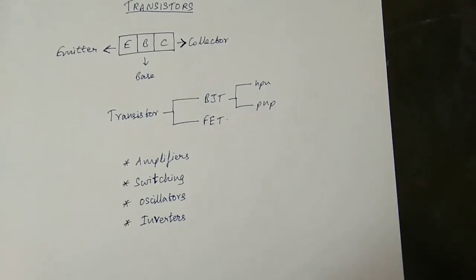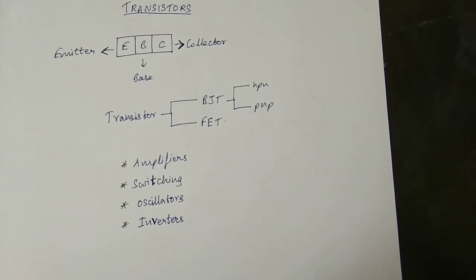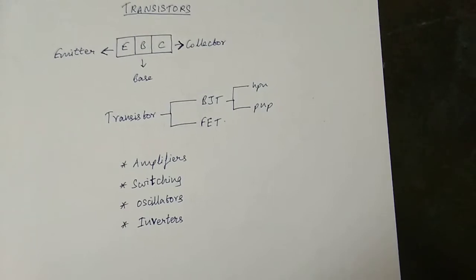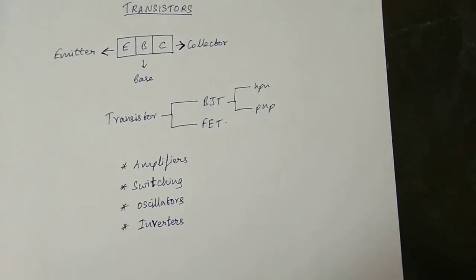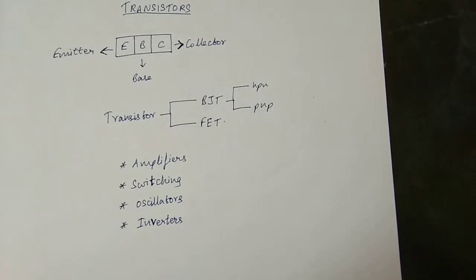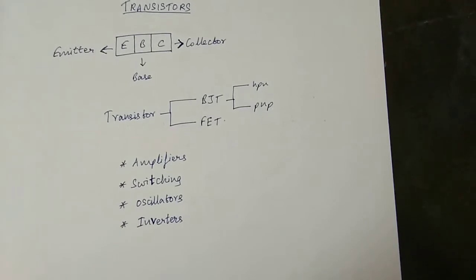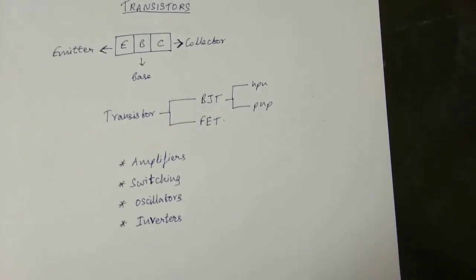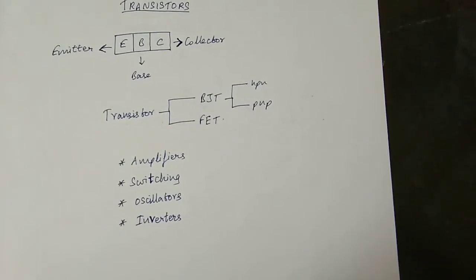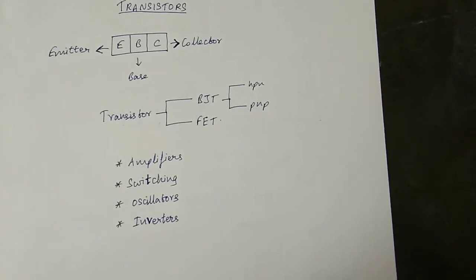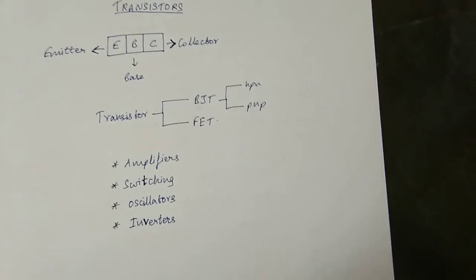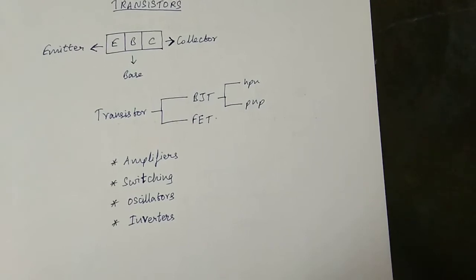You can simply amplify using the transistor. There are two types: one is the BJT — Bipolar Junction Transistor — and the other is the FET — Field Effect Transistor.